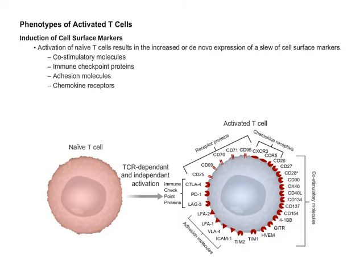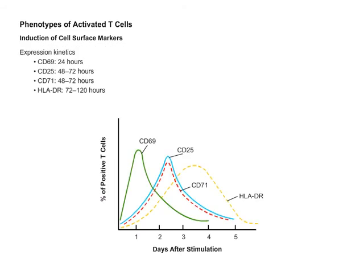Of the various markers shown, the ones most commonly used to experimentally assess T-cell activation are the interleukin-2 receptor CD25, the early activation antigen CD69, and the transferrin receptor protein CD71. In addition to the molecules shown, MHC class II molecules are also expressed by activated T-cells. It should be noted that there are differences in the kinetics of expression of the various surface markers as listed here.